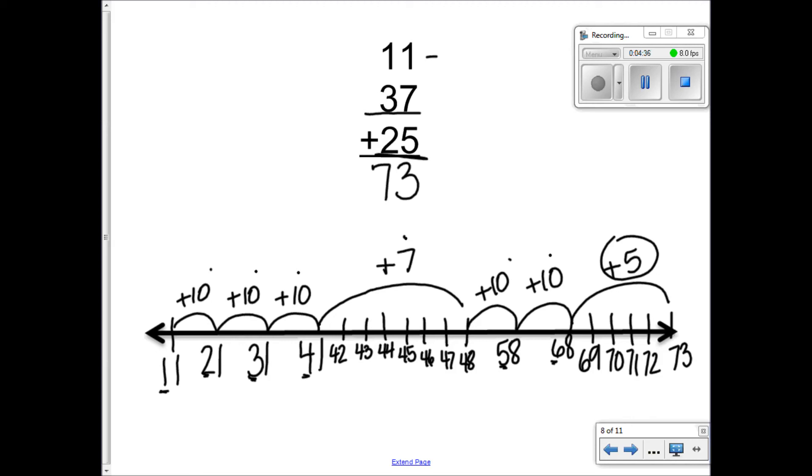These were all called what? Addends. Absolutely. And we were looking for the? Sum. And these two numbers, we had to do what to them? Decompose. Beautiful. What does decompose mean? Decompose. And how many parts do these have? Two. Two parts. Tens and ones. Absolutely. You guys are so brilliant.